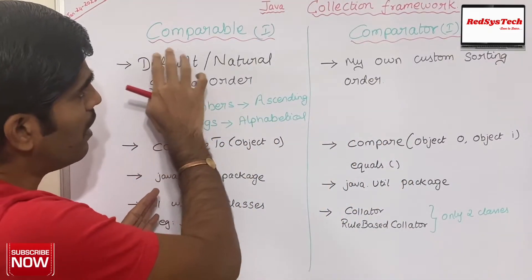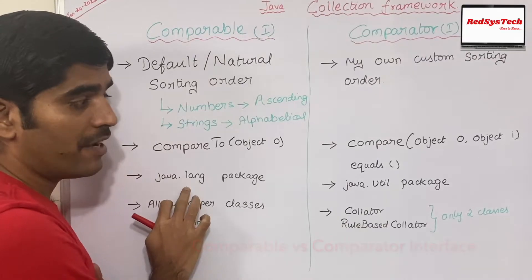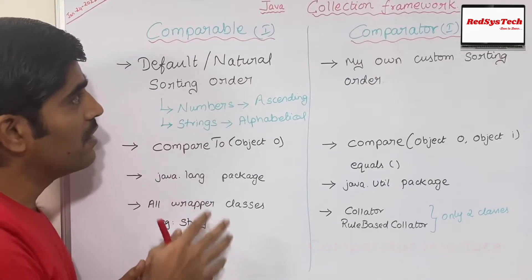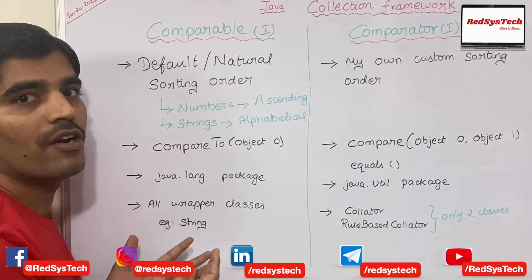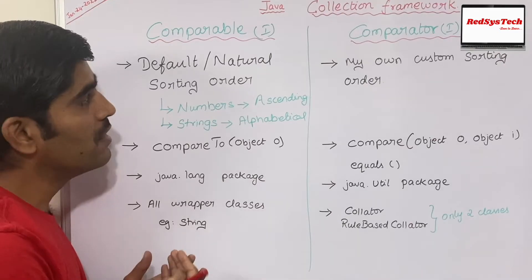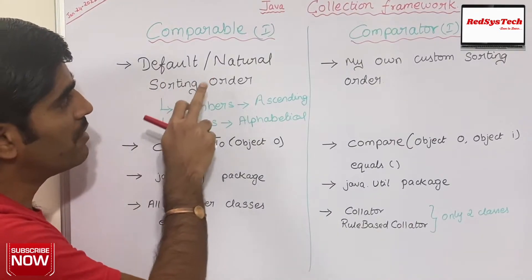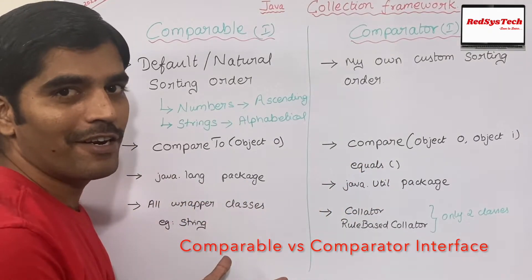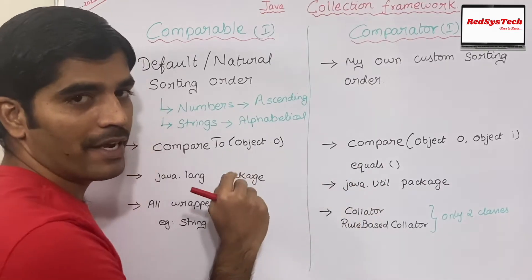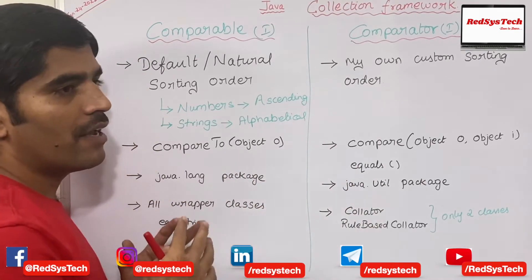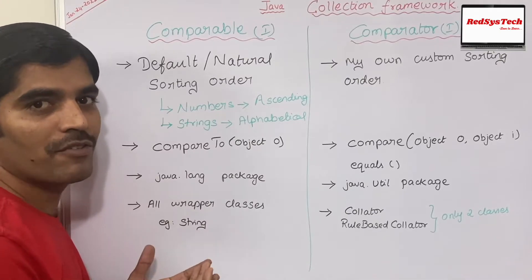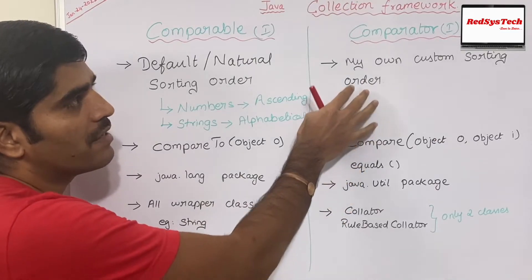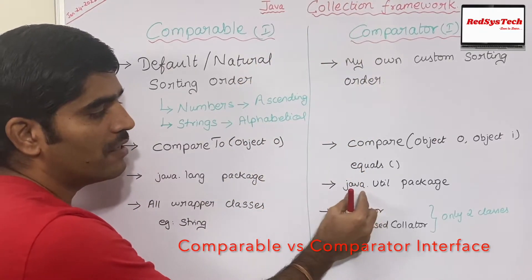Comparable interface comes under the java.lang package, and the comparator interface comes under the java.util package. The reason is that comparable provides the default sorting that the Java language itself provides — that is why it is in java.lang. Comparator is more of a utility, since you are defining your own sorting order — that is why it is in java.util. Later, they realized that if developers want their own implementation of sorting, they need an implementation class, which is why they created the comparator interface and placed it in java.util.